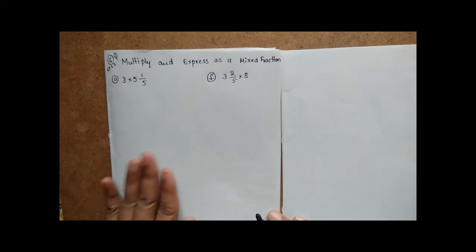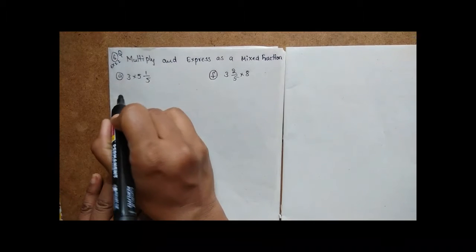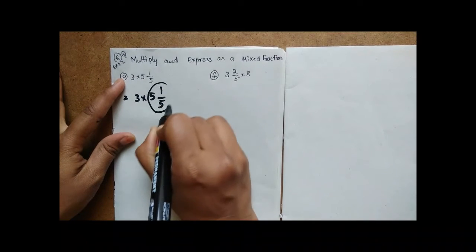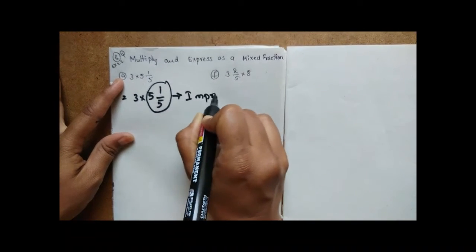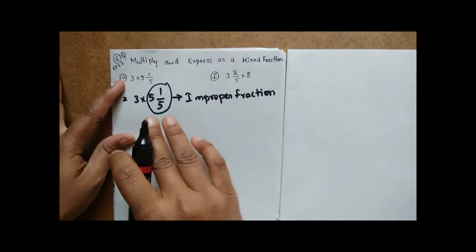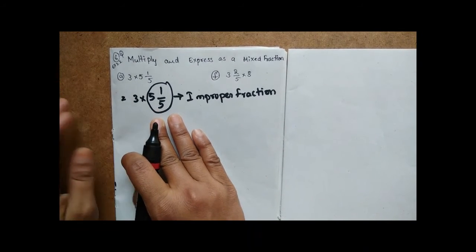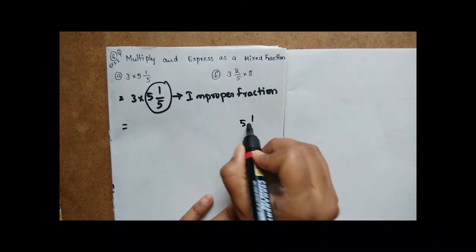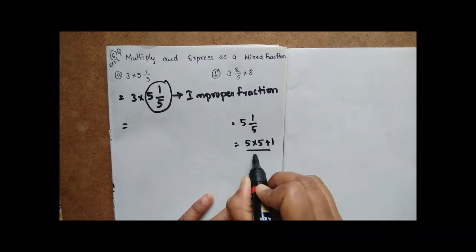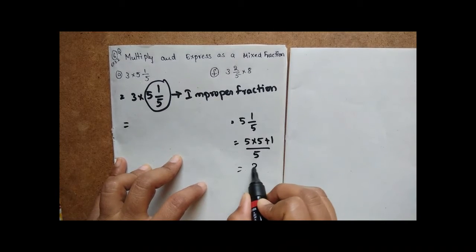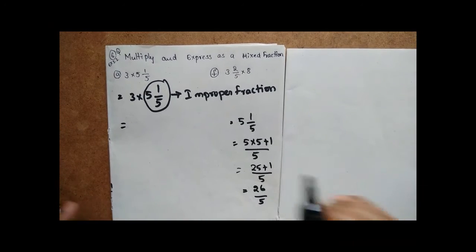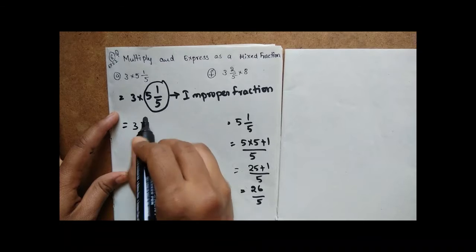So let's move into the answer. We have to multiply 3 into 5⅕. Since 5⅕ is a mixed fraction, we need to convert it to an improper fraction. Here, 5⅕ means 5 into 5 plus numerator 1, over denominator 5. So 5×5 is 25, plus 1, gives us 26 by 5.